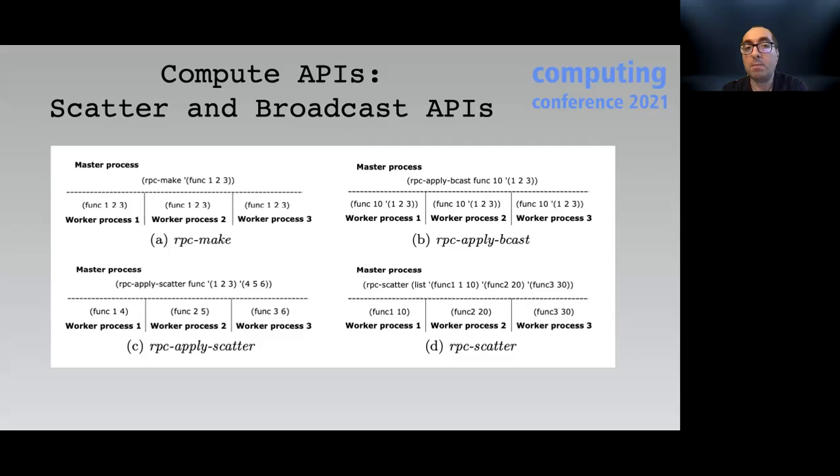RPC apply bcast accepts user-defined function name and arbitrary number of parameters and sends serialized function along with the values of all parameters from the master process to all worker processes in which parameter can be any type including a list or a single value.